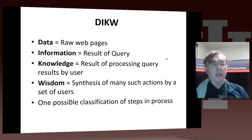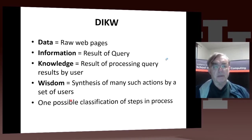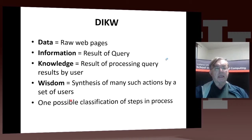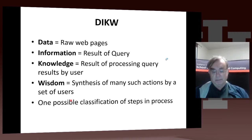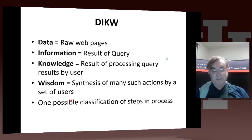When I introduce DIKW, data is reasonably clear and wisdom is reasonably clear, but information and knowledge are not so clear. You can even do a slightly richer classification: raw data, data, information, knowledge, wisdom.